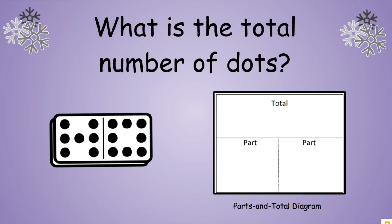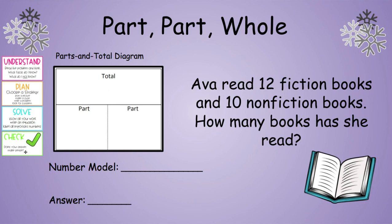Now let's try this with a number story. We're going to use the UPS Check method. First, we need to understand — read the problem and find out what facts we know or don't know. Ava read 12 fiction books and 10 nonfiction books. How many books has she read? We want to find out how many books she has read, so we're going to add or put together how many books she's read so far. She's read 12 fiction and 10 nonfiction, so we can start filling out our parts and total diagram.